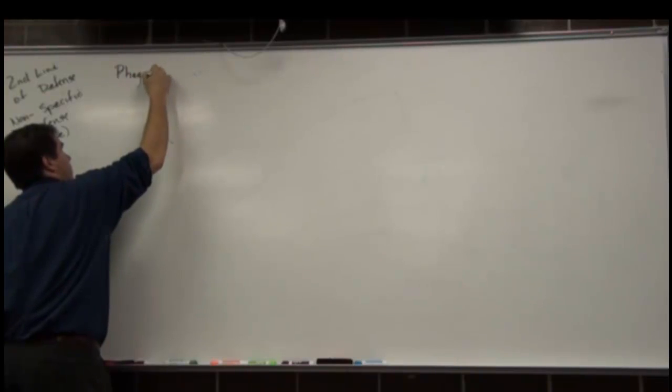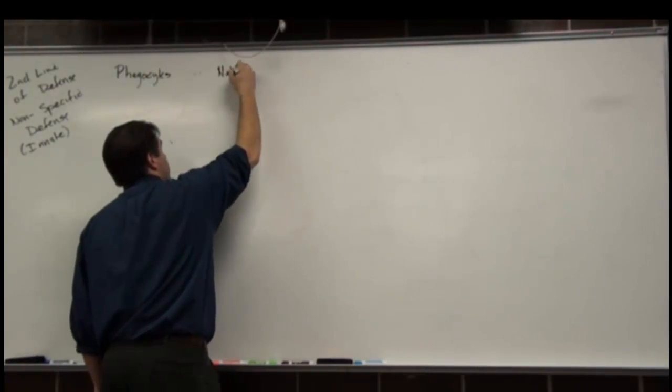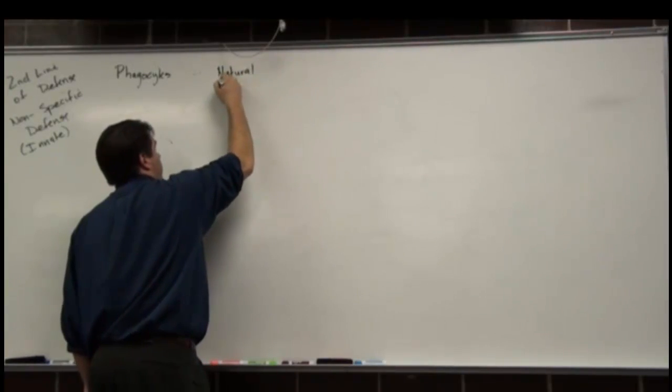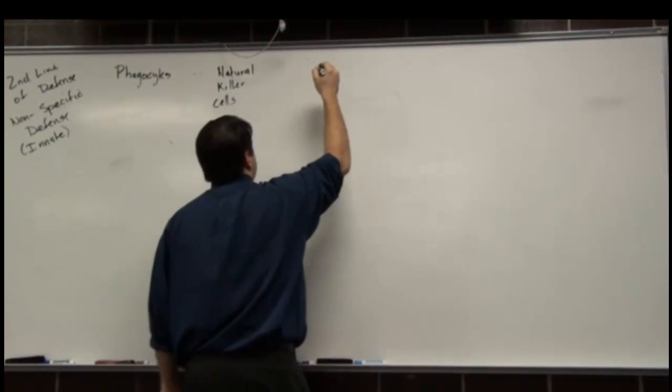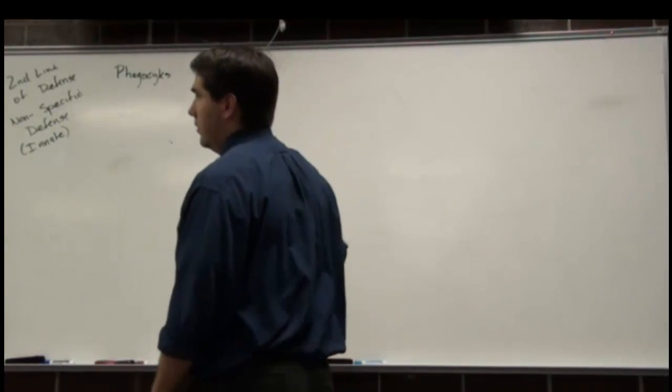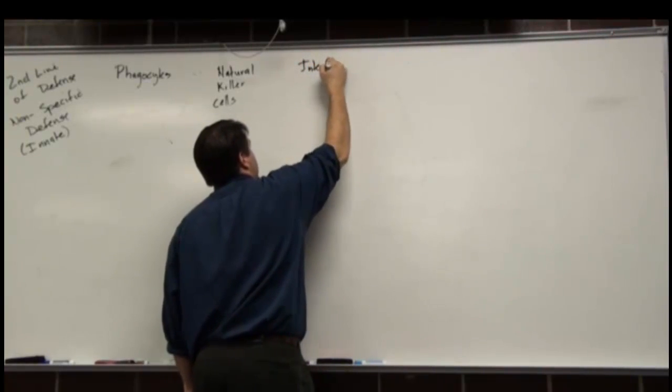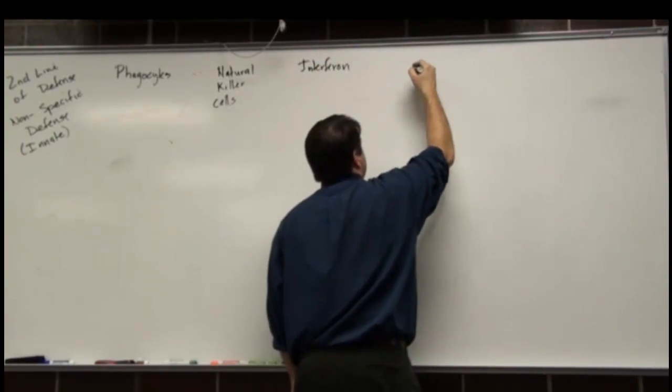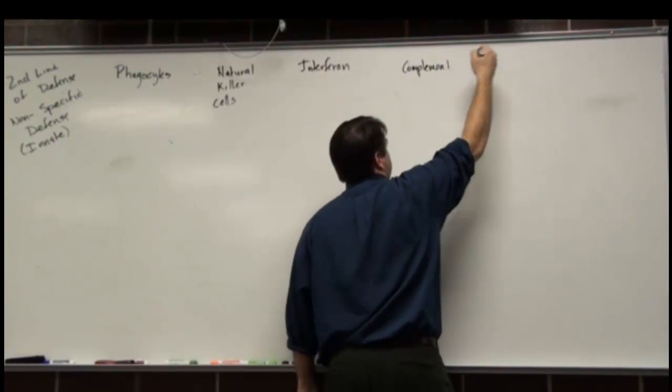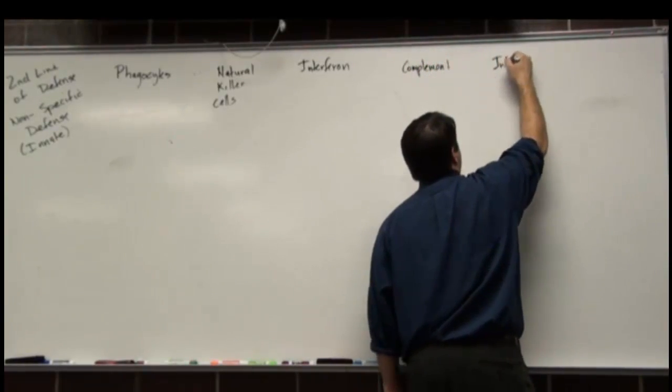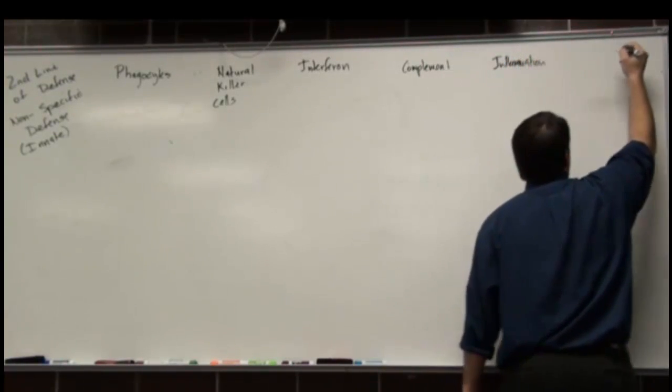It's called nonspecific defense, and sometimes it's called the innate defense, because you're born with it. Whereas the specific is acquired, you have to be exposed. You have to eat that dirt as a kid and acquire the defense against those bacteria. They are: Phagocytes, Natural killer cells, Interferon, Complements, Inflammation, and Fever.